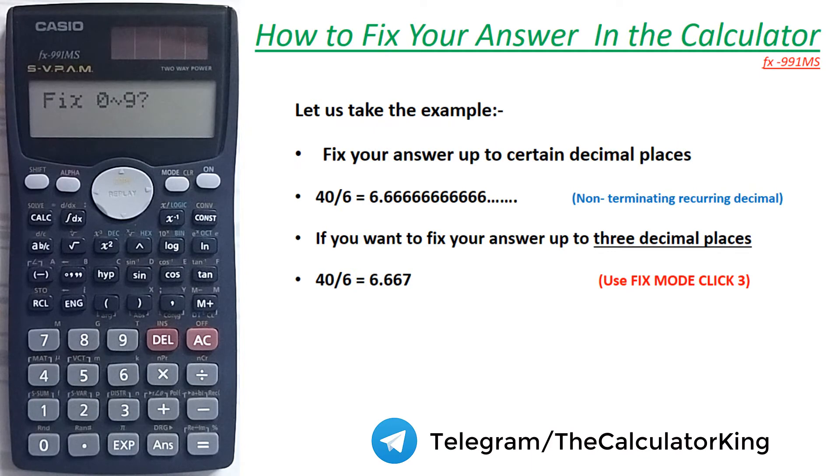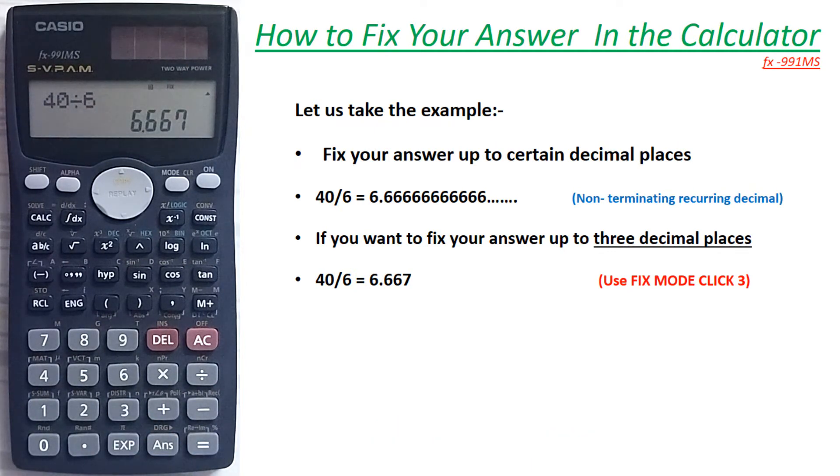Now if you want to fix the answer up to three decimal places, press 3. Now you can see the answer is 6.667. You will get the rounded answer.